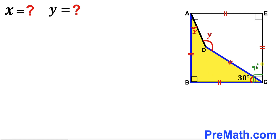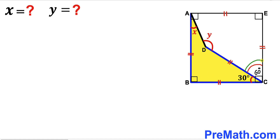Now let's make an observation: the whole angle at C in the square is 90 degrees, and angle BCD is 30 degrees, so the remaining angle DCE has got to be 60 degrees. We can see that side CD and side CE are equal in length with 60 degrees between them, so we connect points D and E.